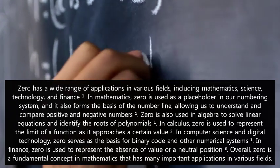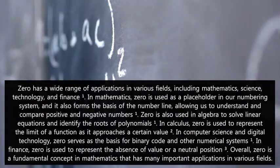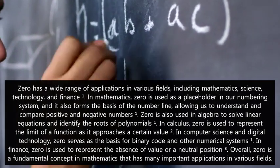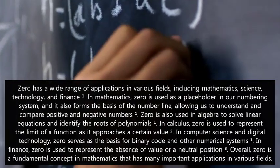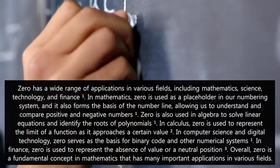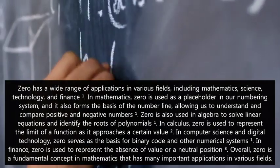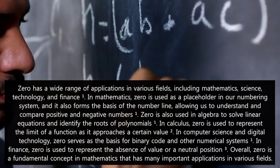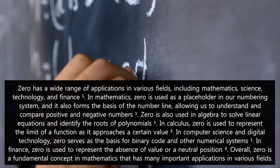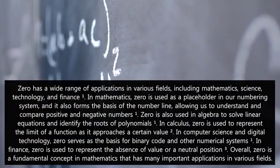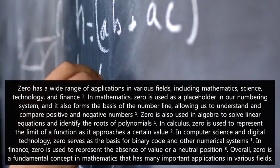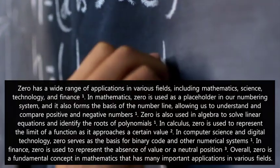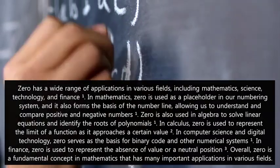In mathematics, zero is used as a placeholder in our numbering system, and it also forms the basis of the number line, allowing us to understand and compare positive and negative numbers. Zero is also used in algebra to solve linear equations and identify the roots of polynomials. In calculus, zero represents the limit of a function as it approaches a certain value. In finance, zero is used to represent the absence of value or a neutral position.